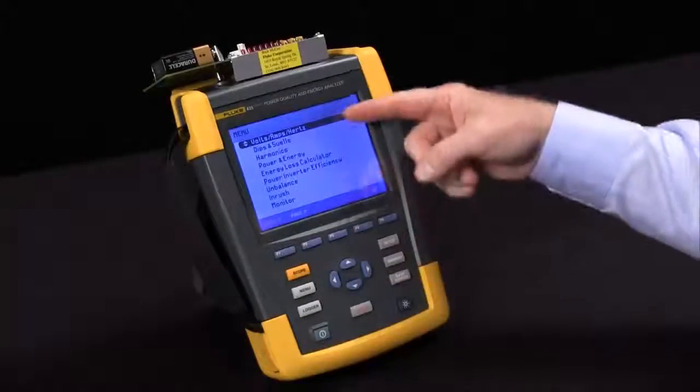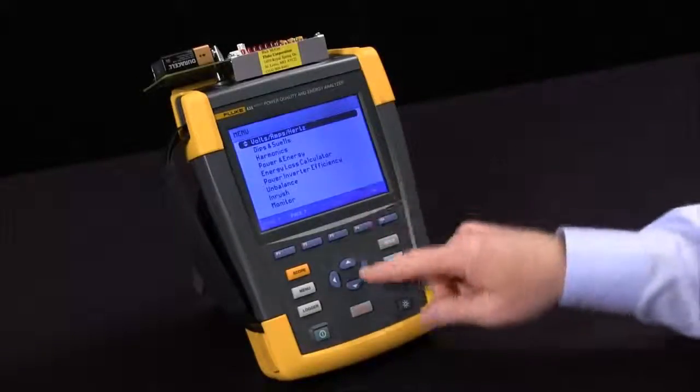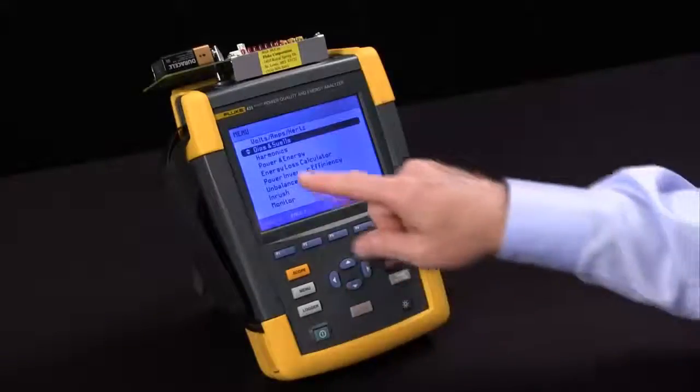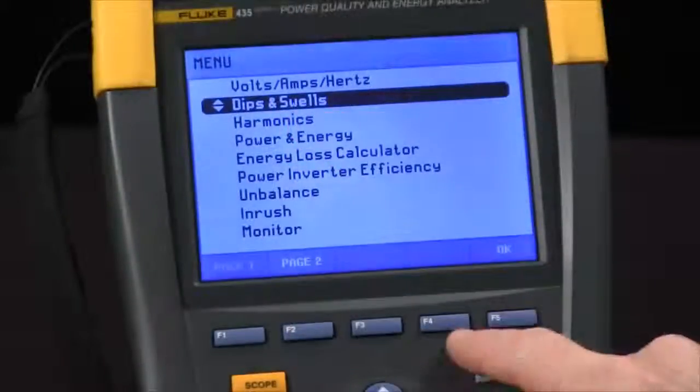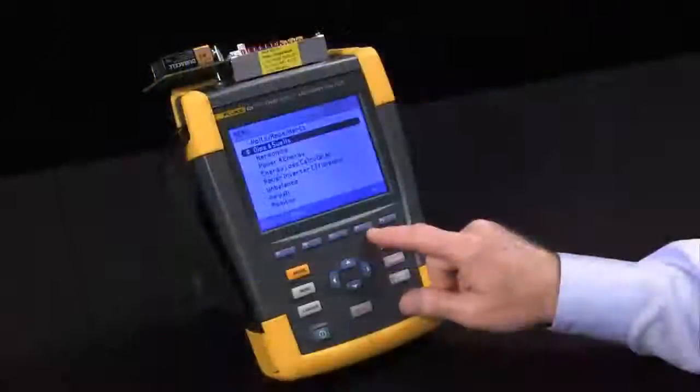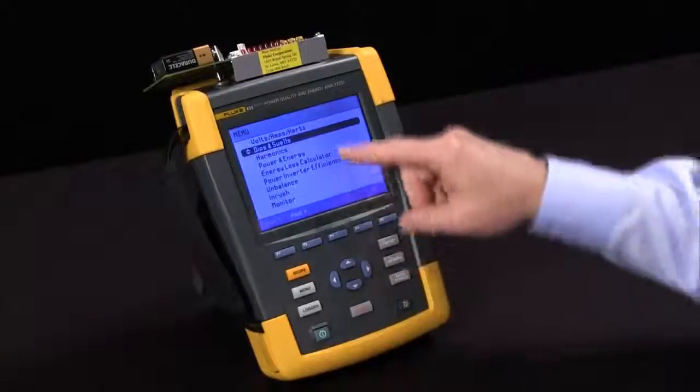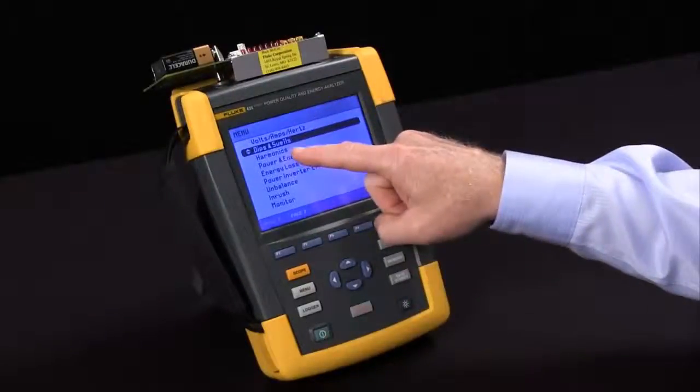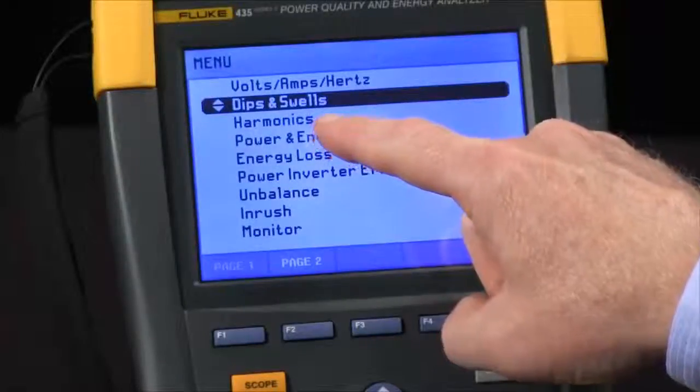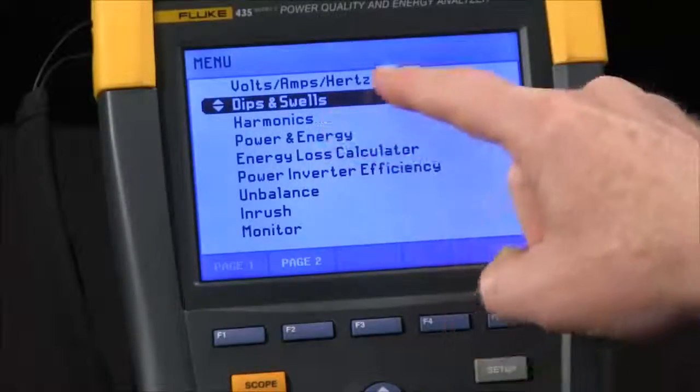The 435 trends for all of these tests at a rate of five readings per second. With the exception of dips and swells, we do 120 readings per second to give you half cycle resolution. We will see a lot more information recorded though in a harmonics recording versus volts, amps, hertz.